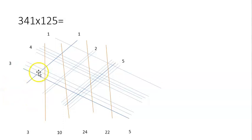Now we total up all the intersections in each group. We find in the first one we have three intersections, in the second we have 10, in the third we have 24.